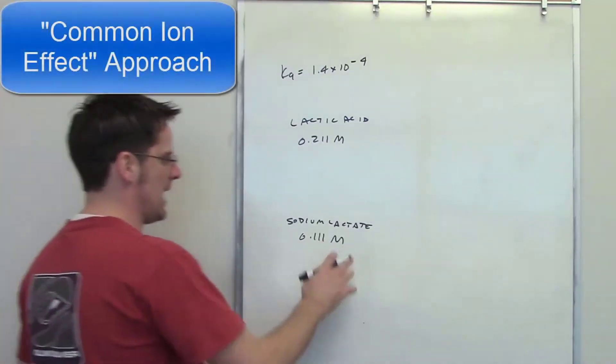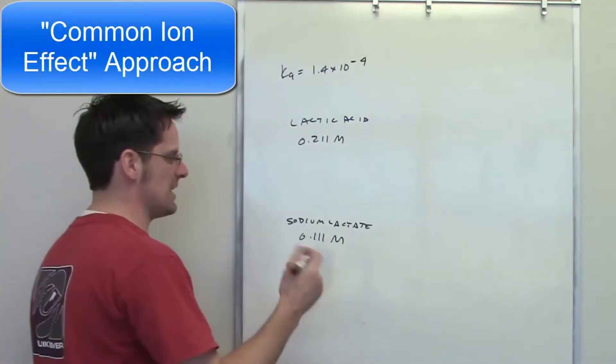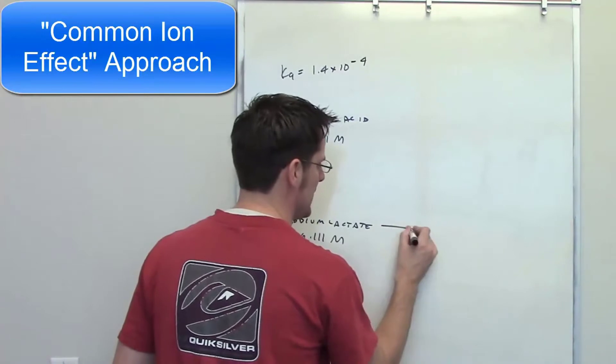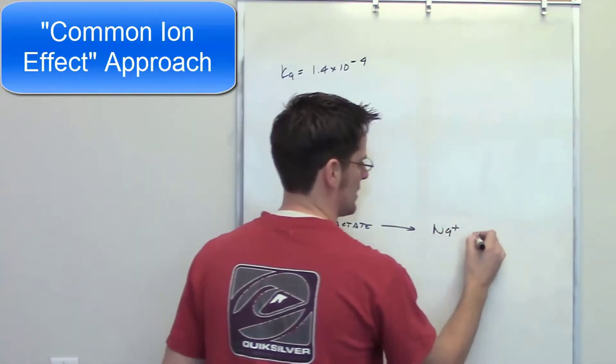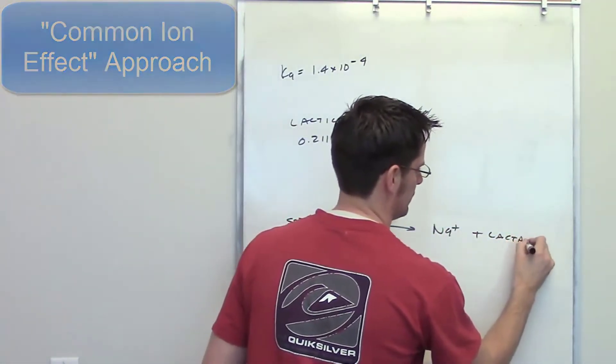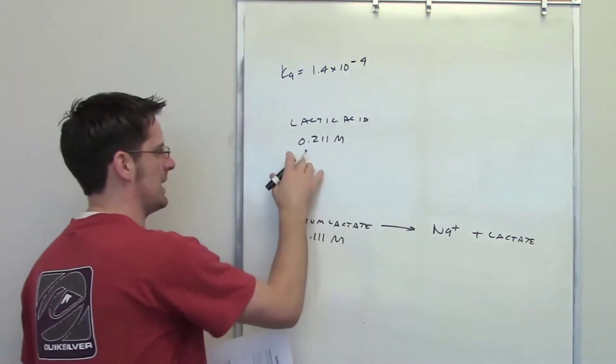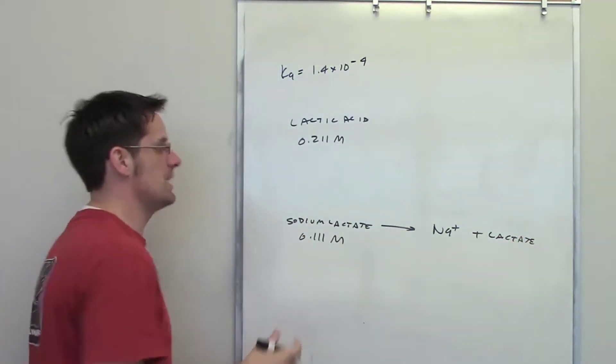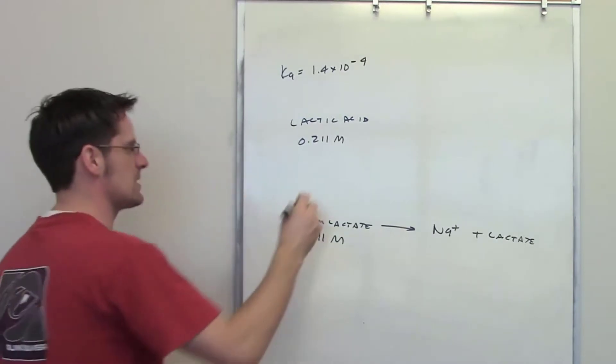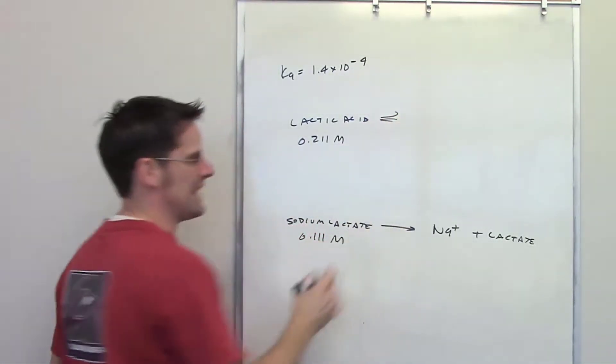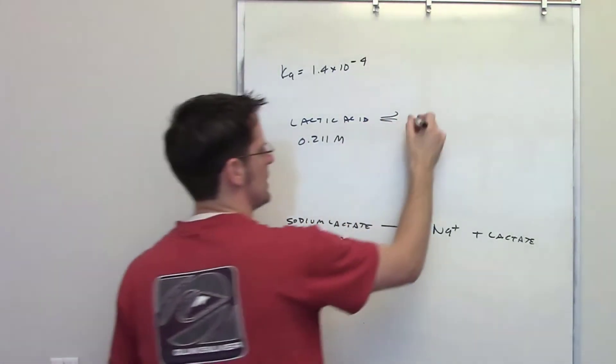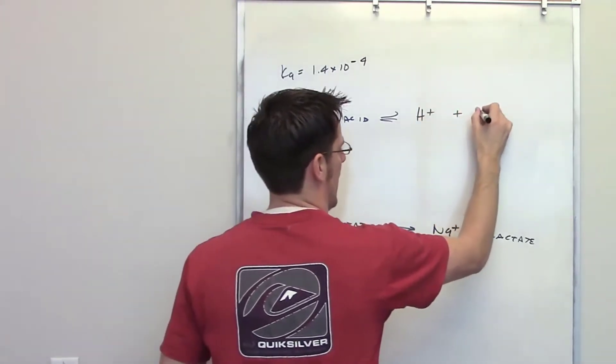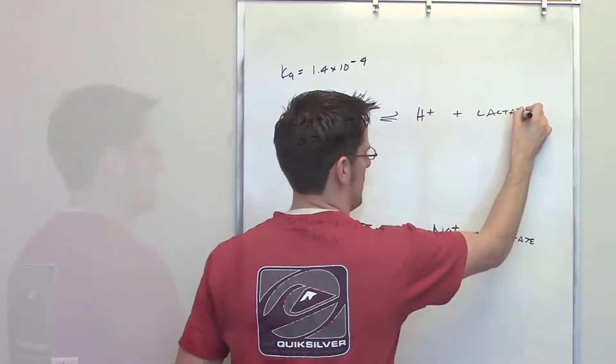Now, sodium lactate is a strong electrolyte, which means it's going to dissociate completely to form sodium, or Na+, and lactate. You also might guess that lactic acid is a weak acid. And indeed it is, it's not one of the seven strong acids I make you memorize. So it's going to have an equilibrium arrow. It's going to dissociate into H+, and lactate, which is its conjugate base.